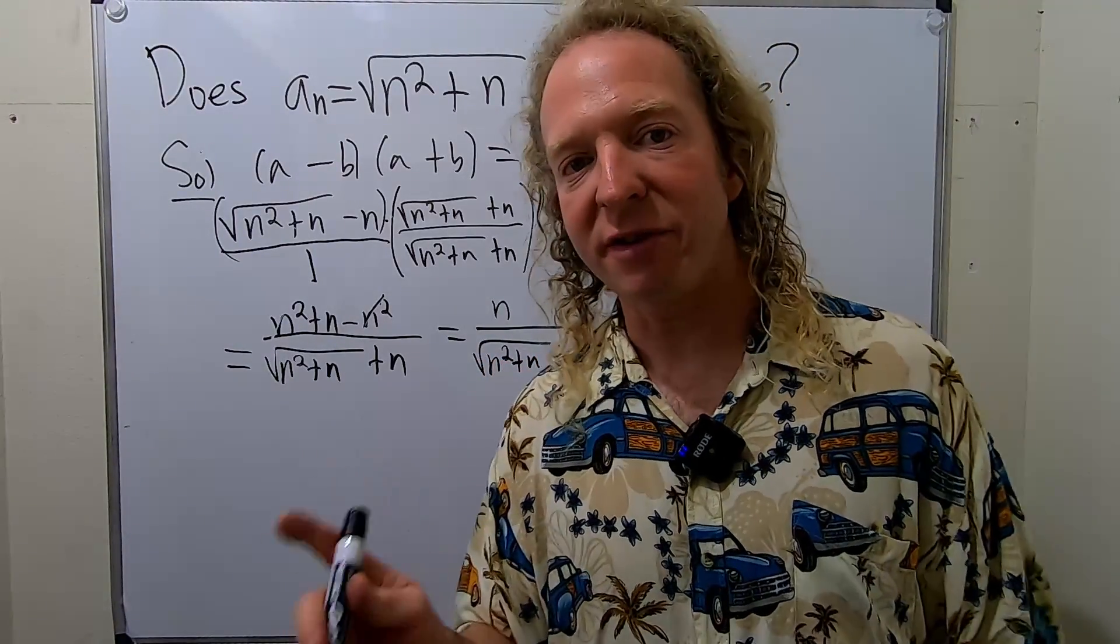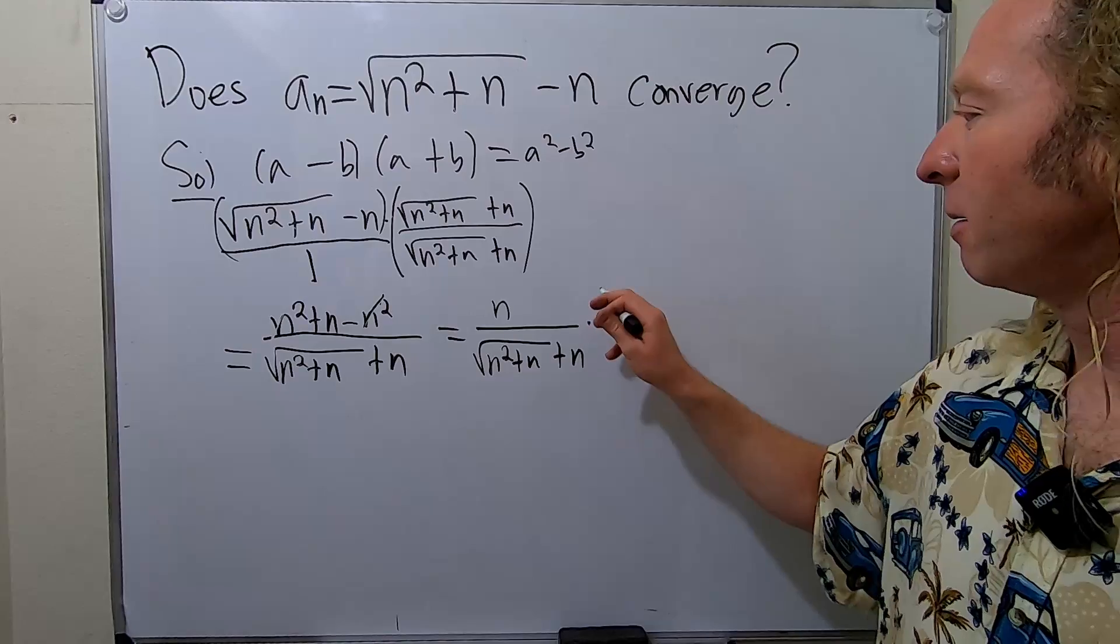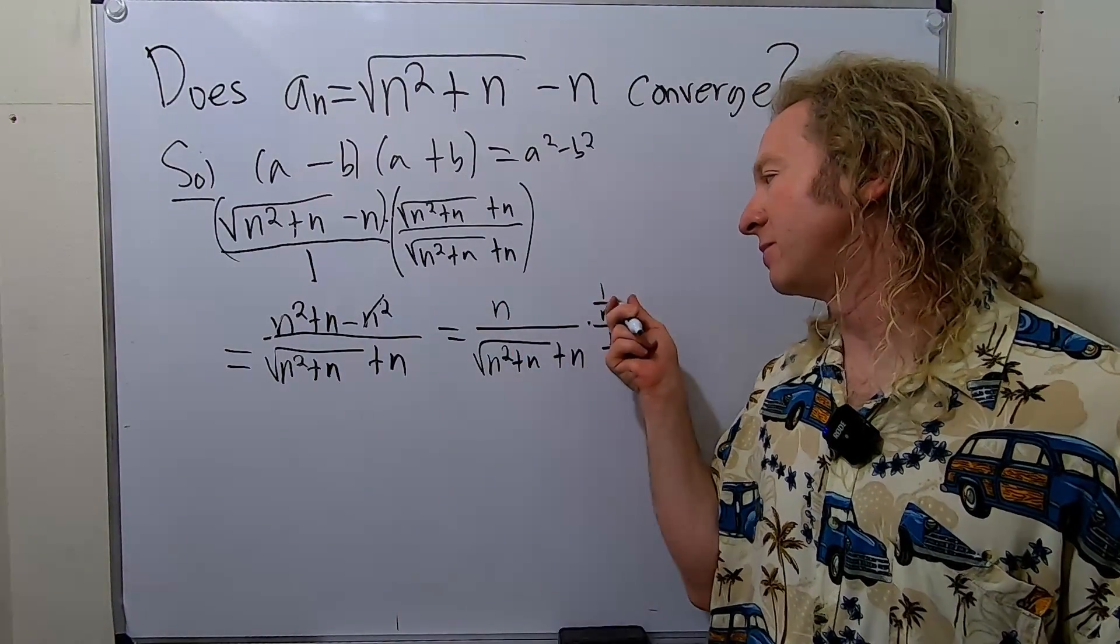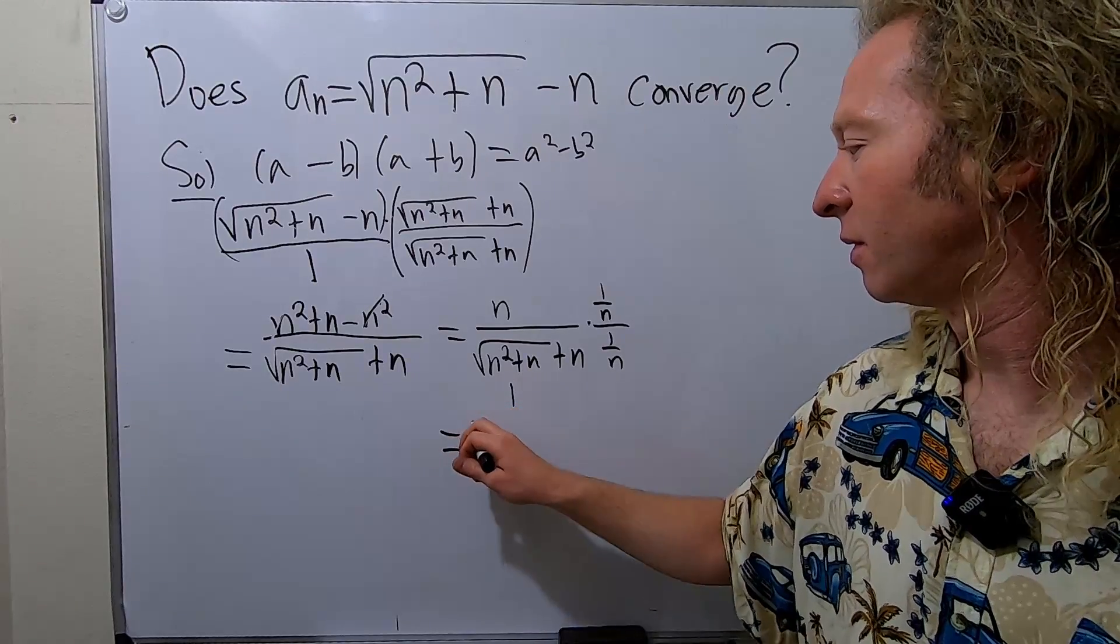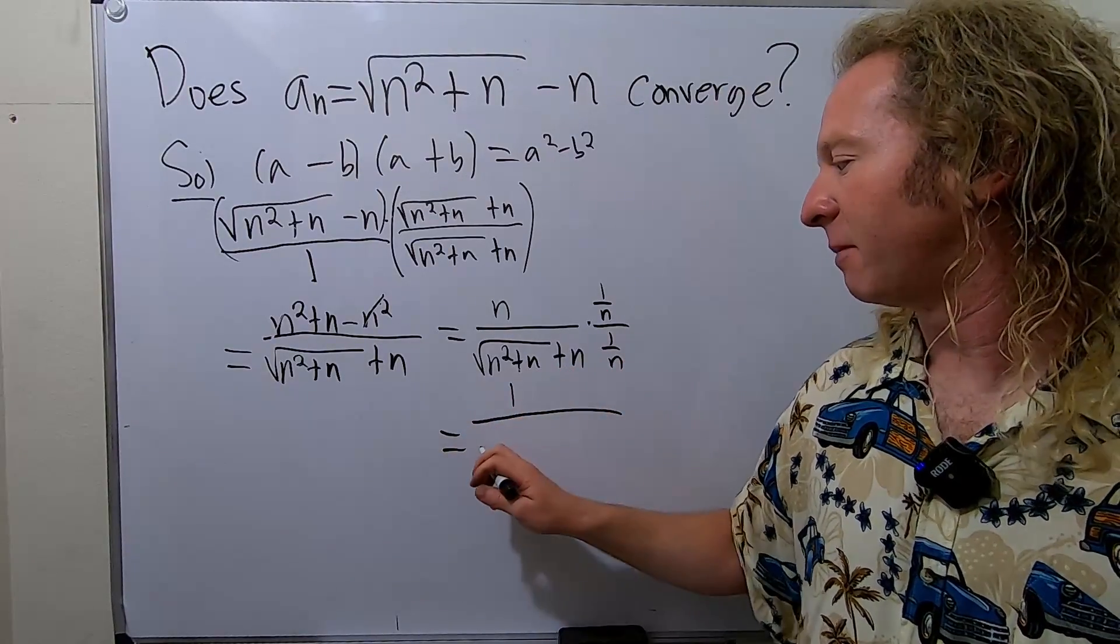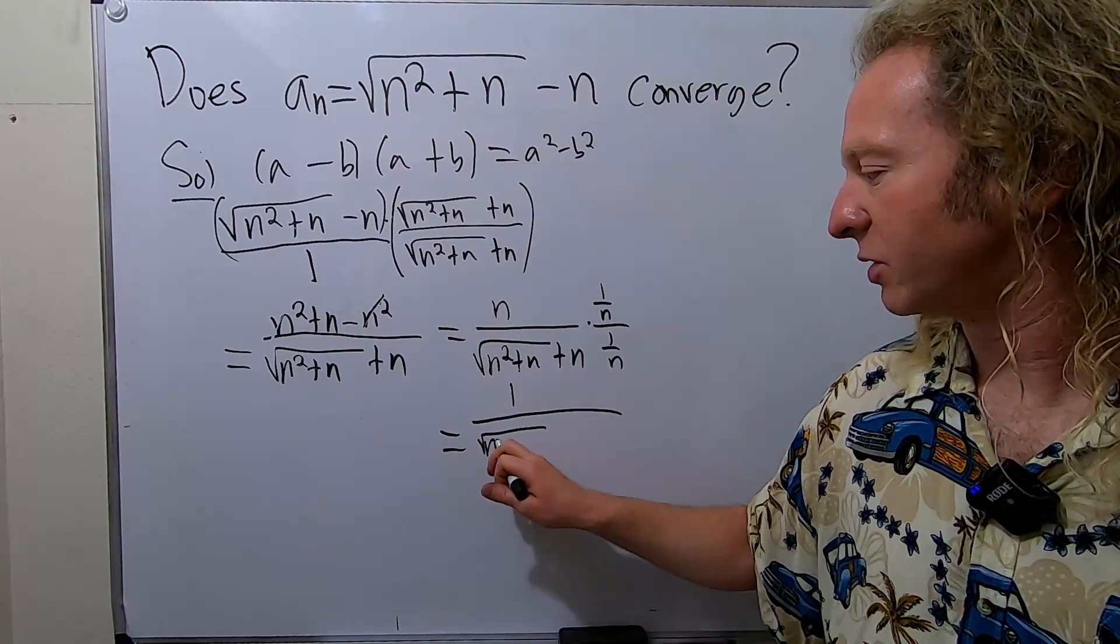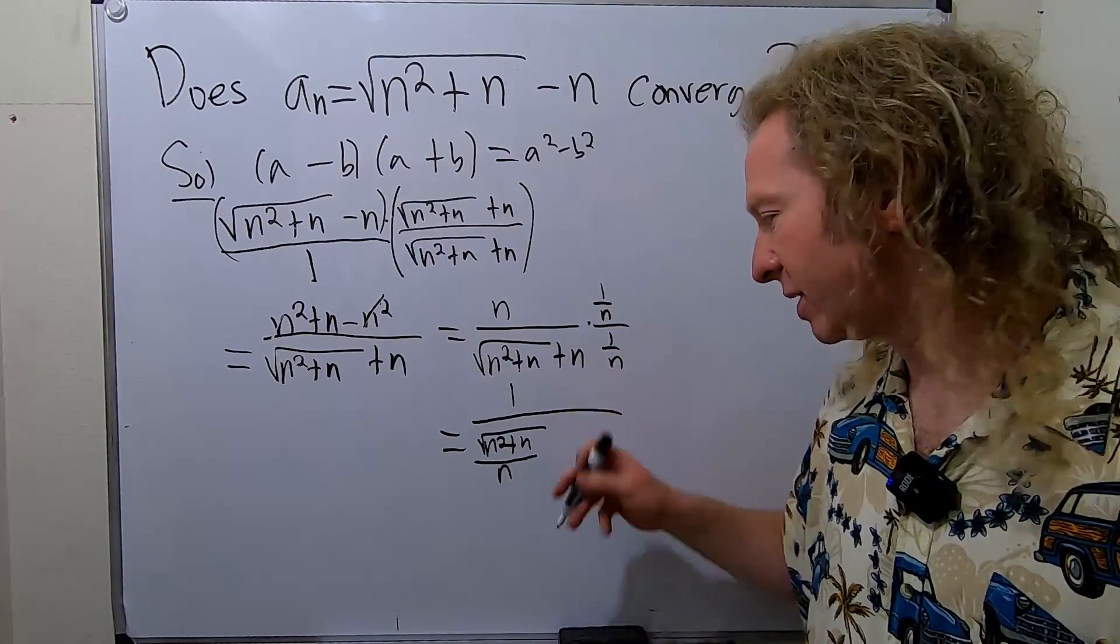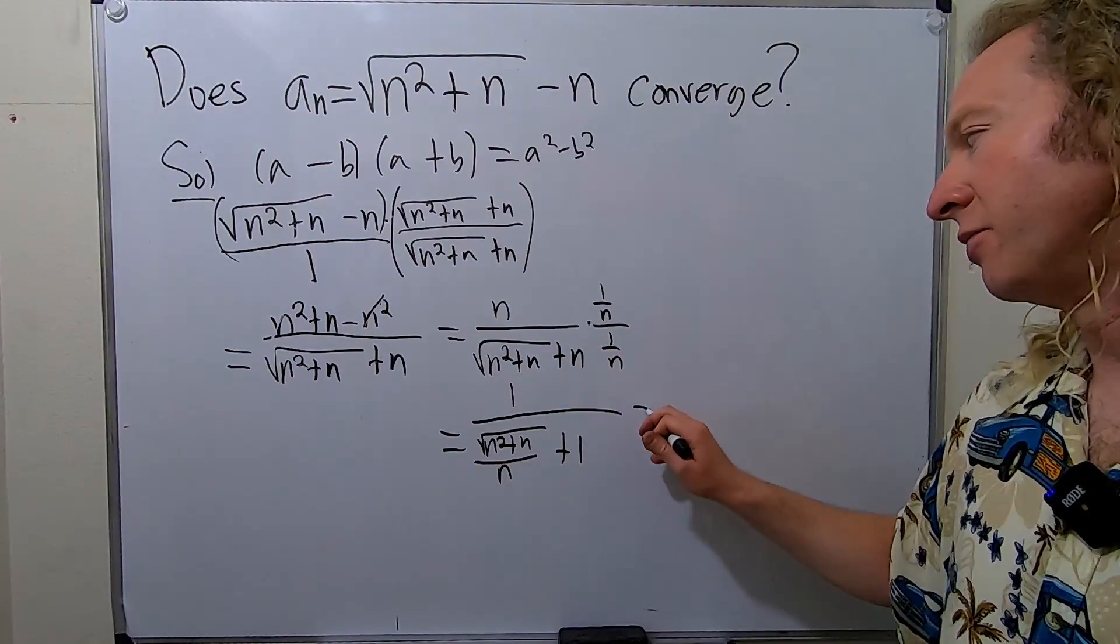Now we're going to divide everything by n. In other words, we're going to multiply by 1 over n over 1 over n. Really cool technique. This times this is going to give us 1. This times this, I'm going to do it in steps so you see it. This is n squared plus n over n. 1 over n times n is 1.